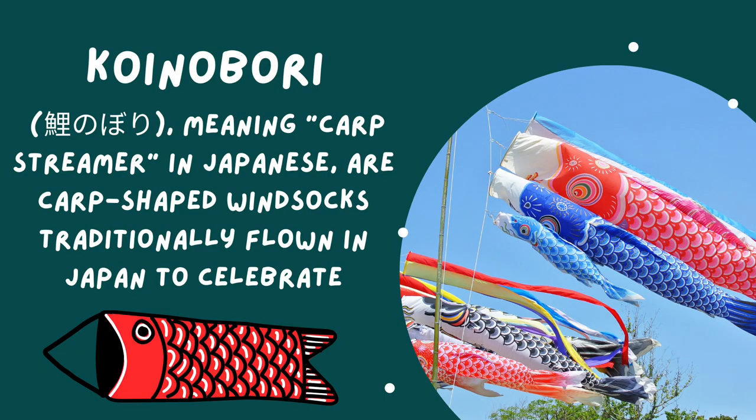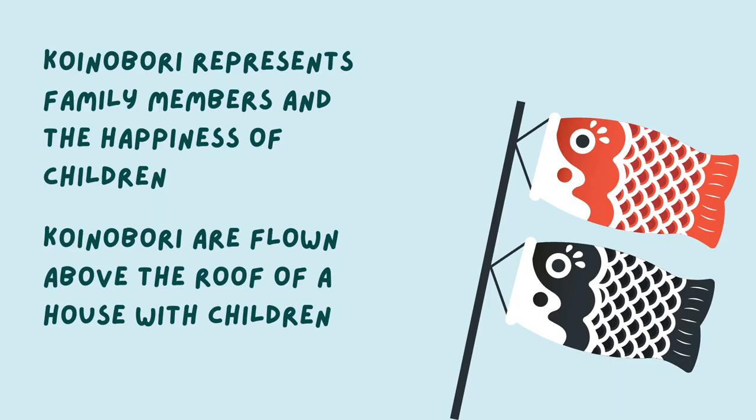Konobori, meaning carp streamer in Japanese, are carp-shaped windsocks traditionally flown in Japan to celebrate children's day. Konobori represents family members and the happiness of children. The konobori are flown above the roof of a house with children in it.